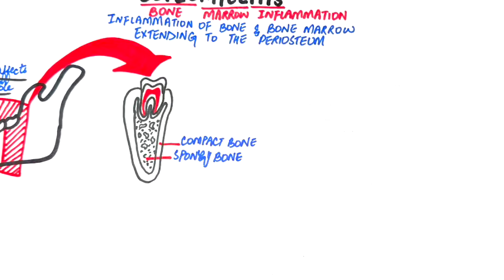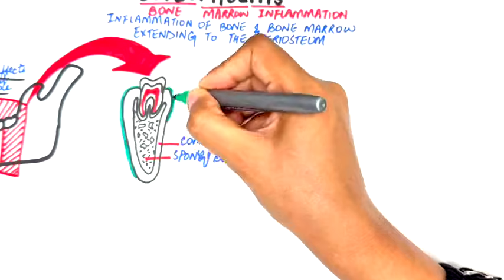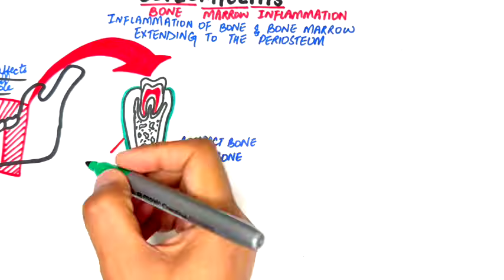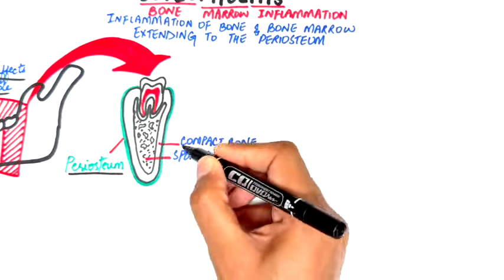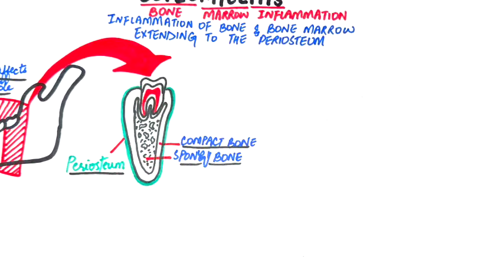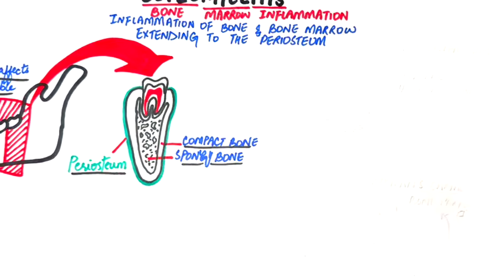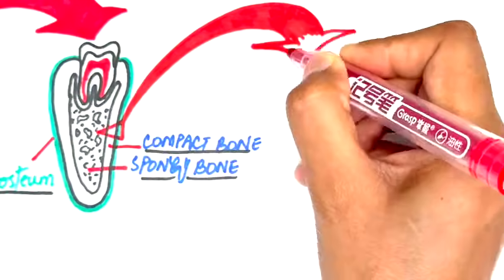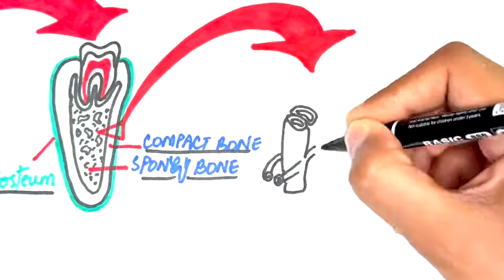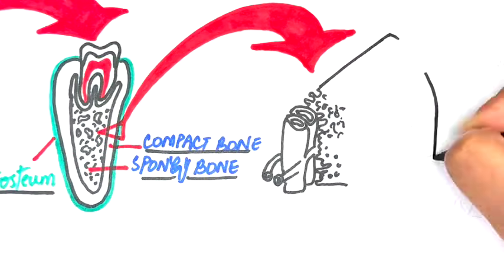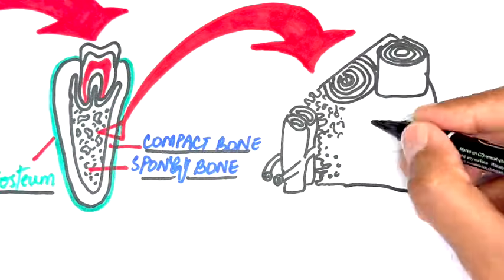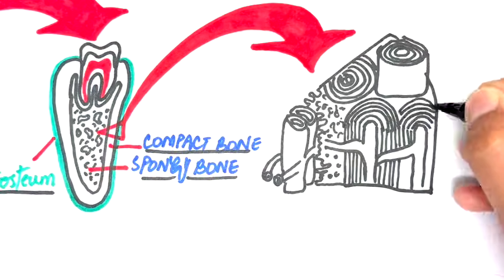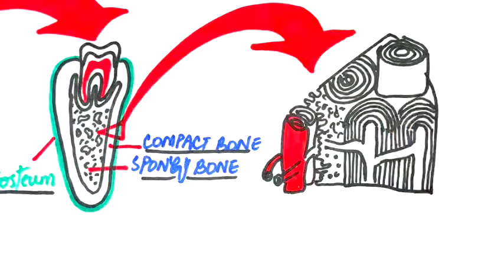The outer layers of compact bone are lined by periosteum on the outer surface, shown in green here. Both the compact and trabecular or cancellous bones are interconnected by a complex vascular network. On a much closer look at the spongy and compact bone together, we can see that the larger blood vessels lie within the spongy bone, which then branches off into smaller vessels that penetrate the compact bone.